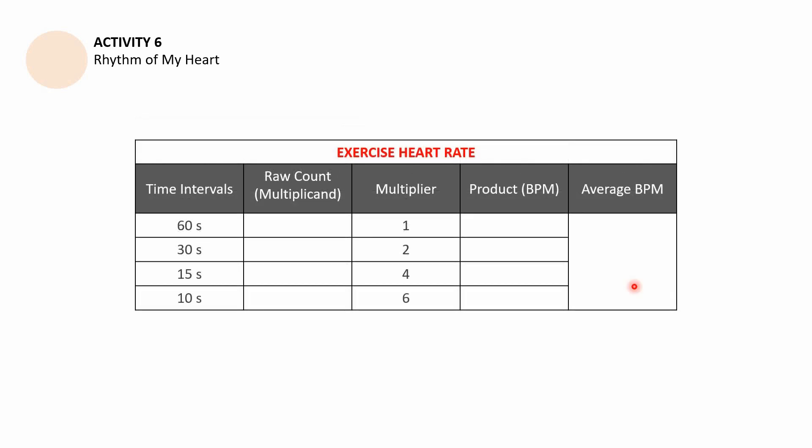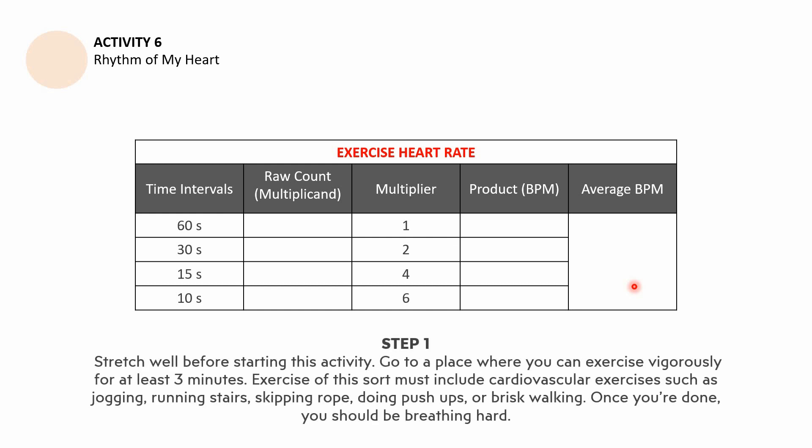Next is exercise heart rate. Please do not perform this activity if you have a severe medical condition — I'm not going to force you to do this part. You need to stretch well before starting, then go to a place where you can exercise vigorously for at least 3 minutes. Exercises you can do include cardio such as jogging, running upstairs, skipping rope, push-ups, or brisk walking.